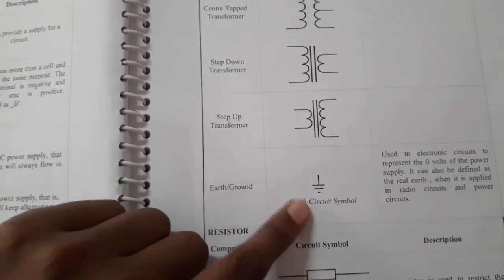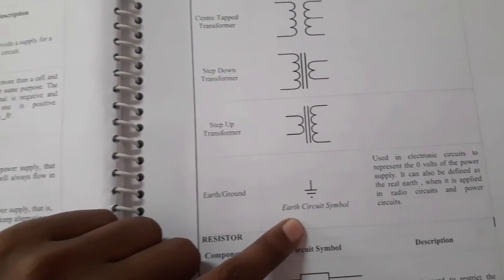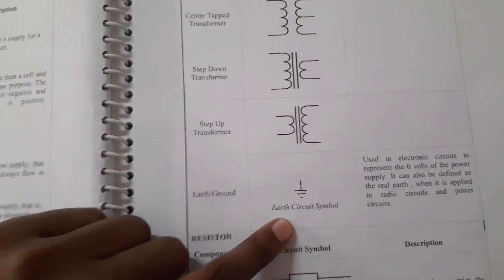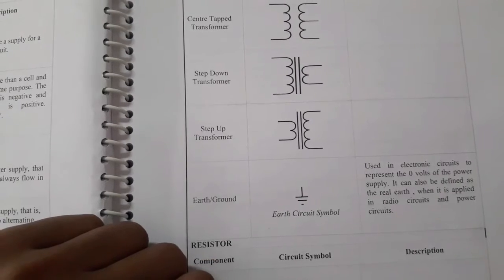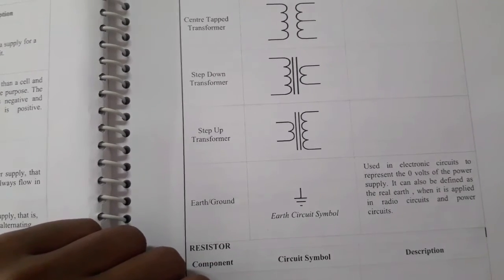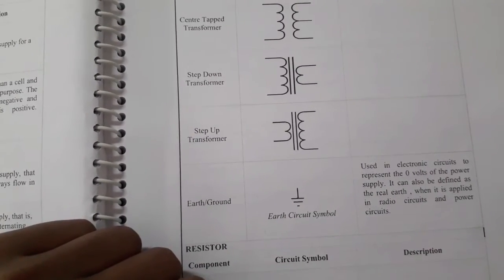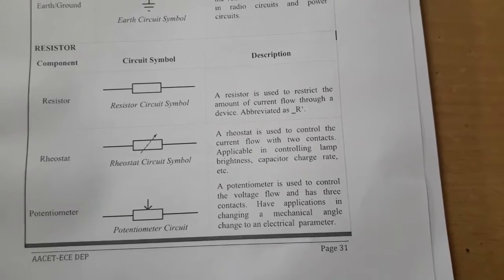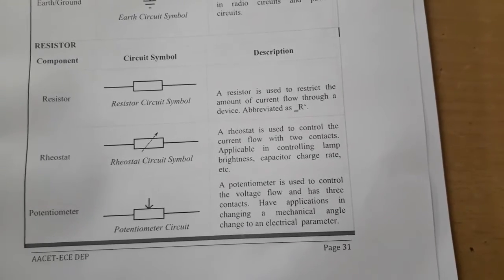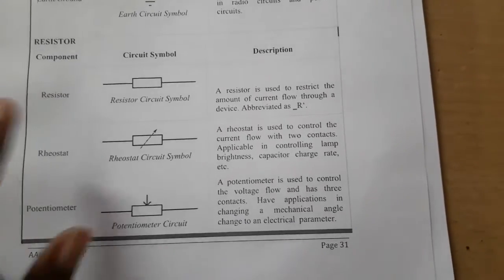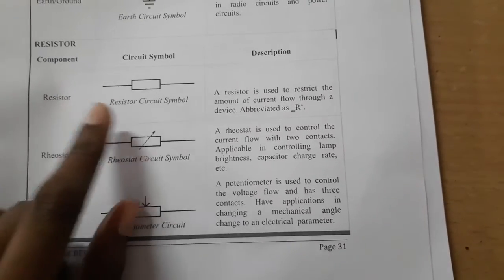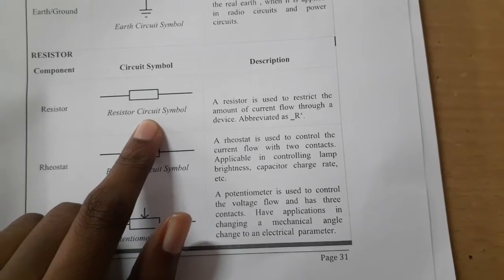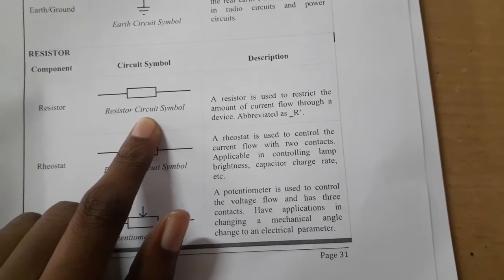This is earth and ground — this is the symbol. It is used to represent the zero volt reference of a power supply. Next, we have resistors. This is the resistor symbol. Resistors are used to oppose current flow in a circuit.